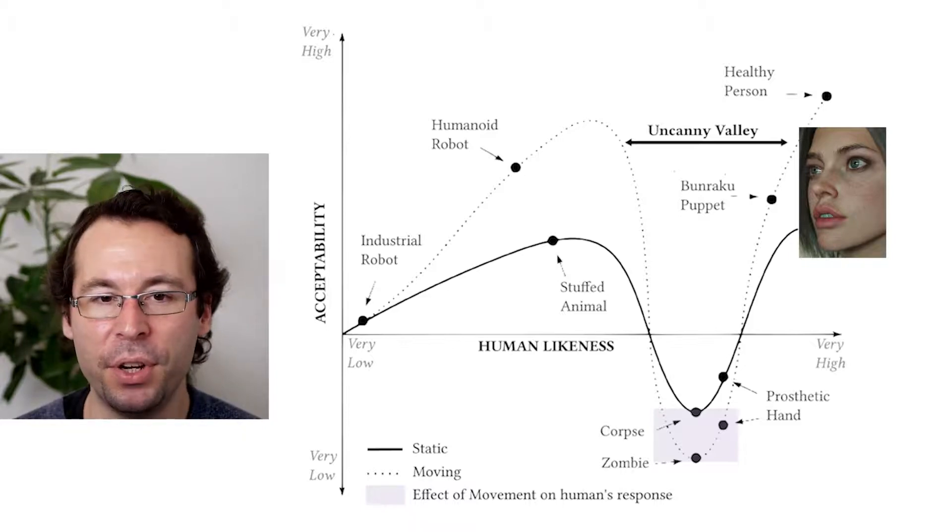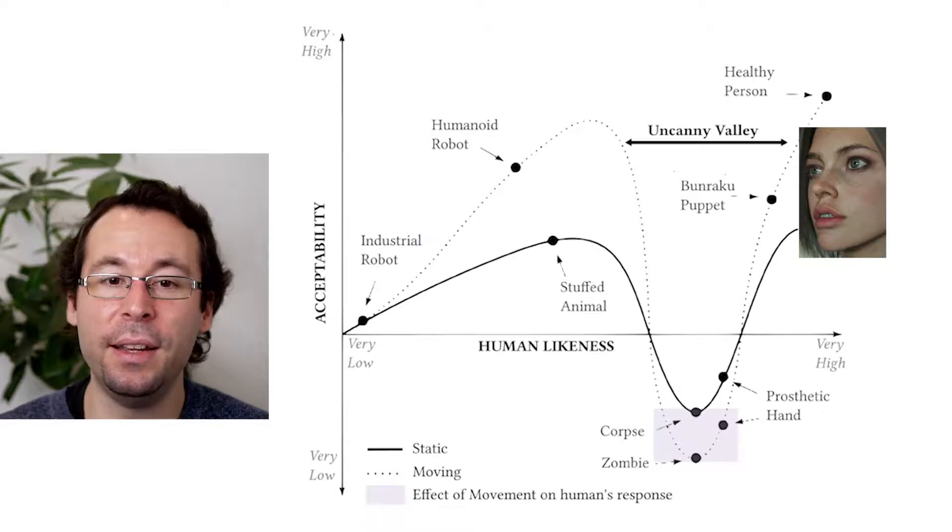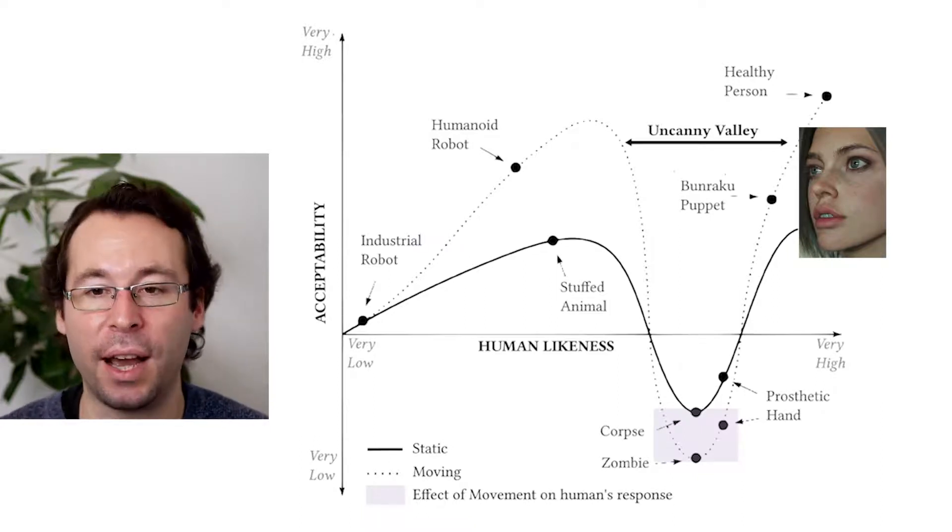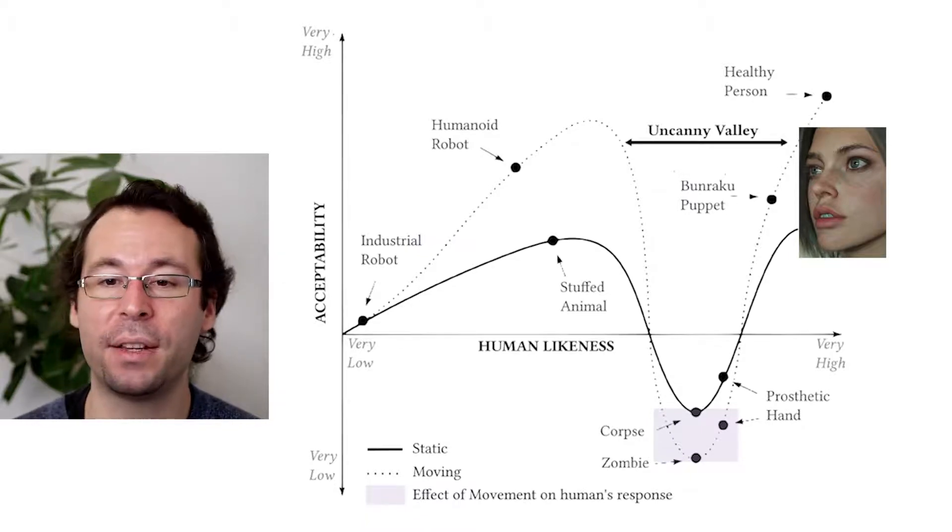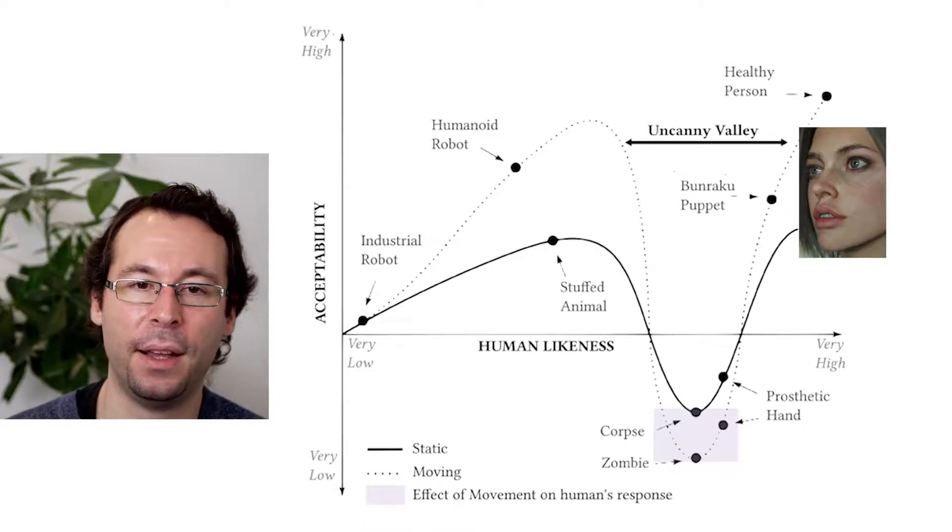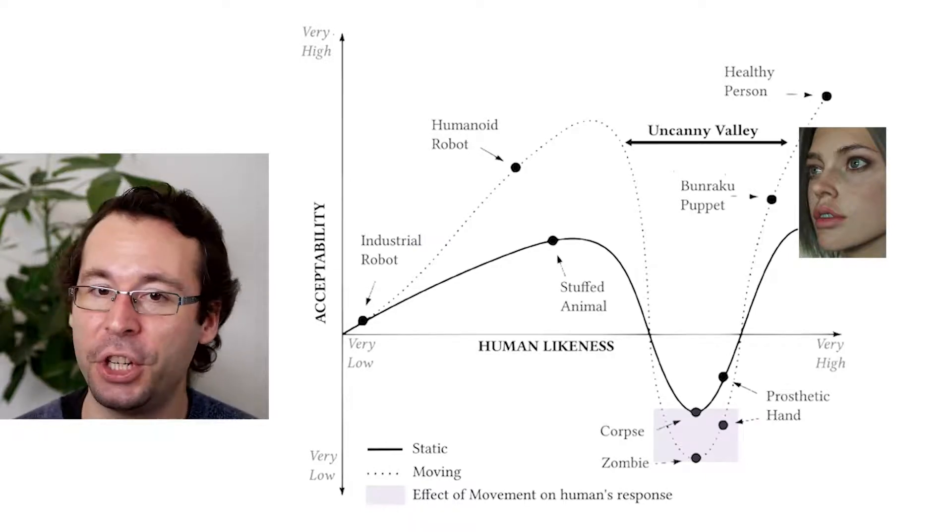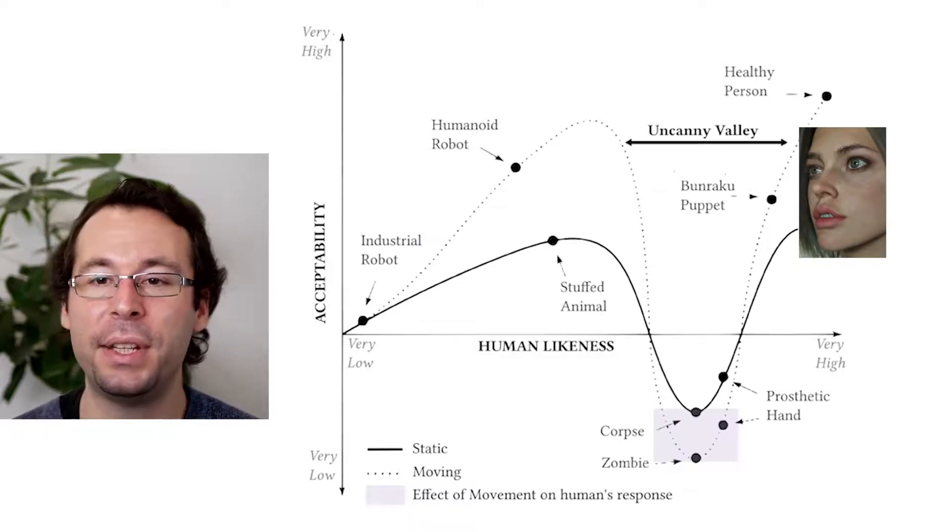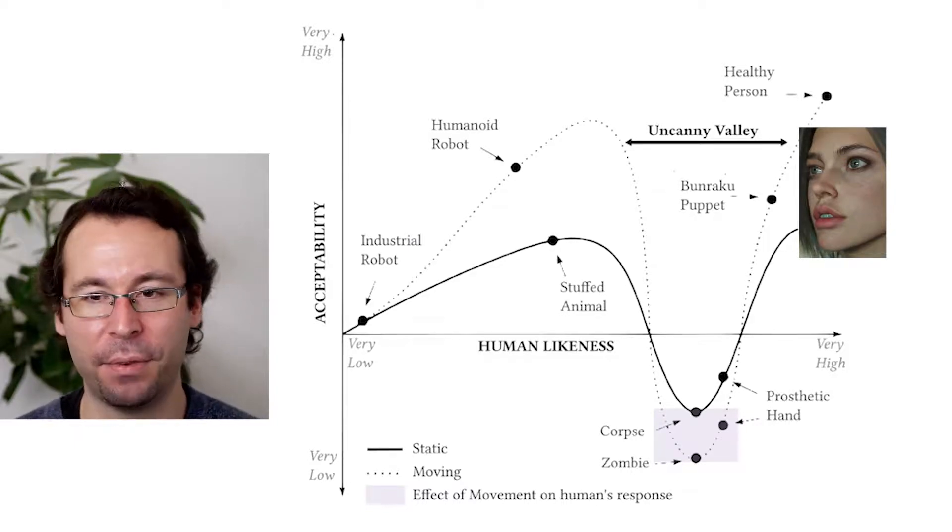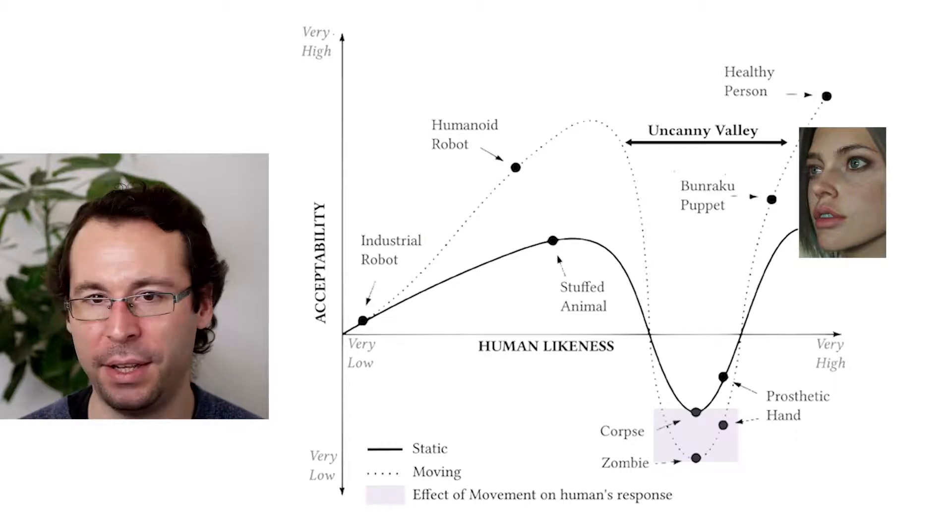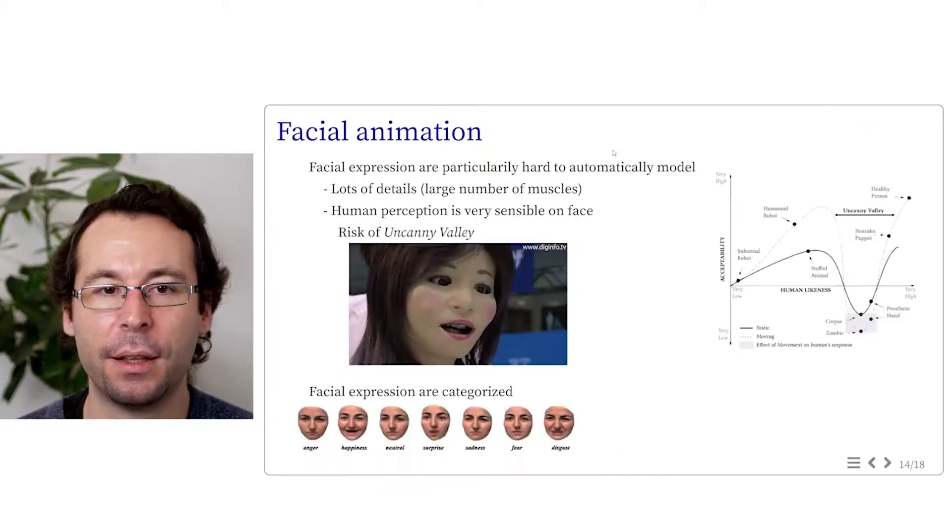If we refine again and again to add all the subtle details of human face, then at some point we pass this valley and reach a point where the face really looks photorealistic and alive. But reaching this point is quite hard and requires lots of effort. We can note that this uncanny valley exists both for static shape and animation, but its effect is even more sensible for animation, as a lack of detail in the motion of a perfectly photorealistic 3D model will look odd.